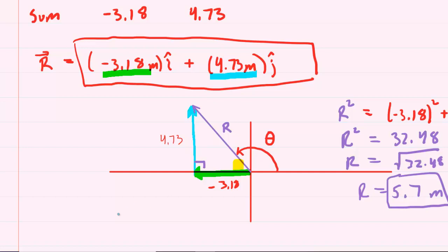So to find that angle, we use the tangent. We can see that the tangent of our internal angle, which we can mark in blue, is equal to the opposite side divided by the adjacent. Now, opposite of our blue angle is 4.73, and adjacent to our blue angle is 3.18.